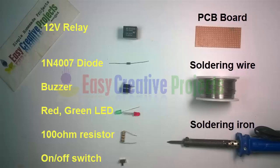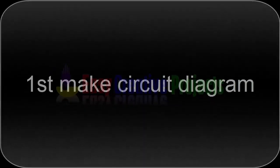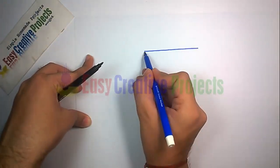On-off switch, PCB board, soldering wire, and soldering iron. First, make the circuit diagram. The 12 volt relay has five pins.